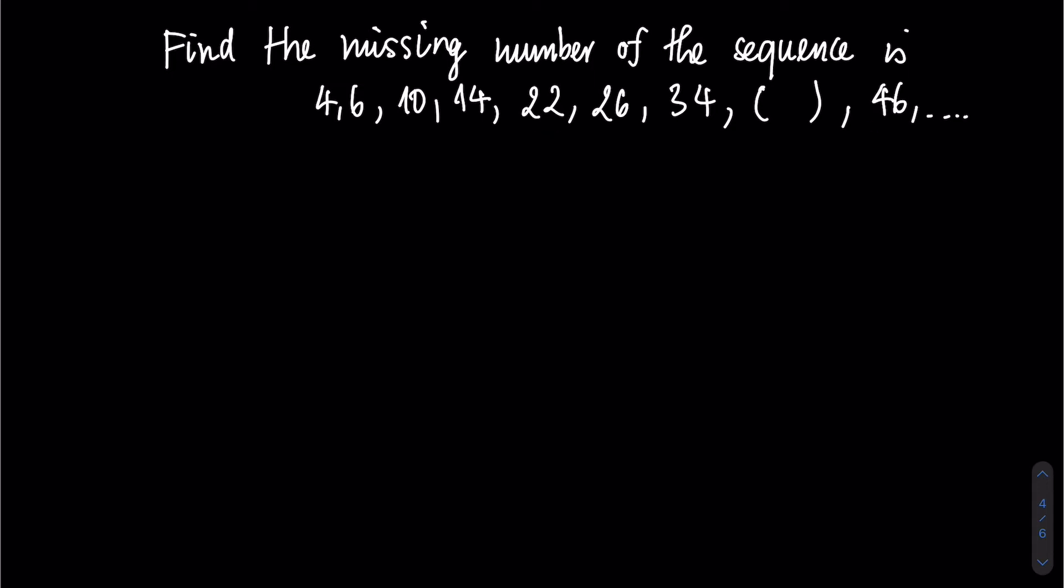Firstly, we can see that all the numbers are even. We will try to divide everything by 2. See what we will have. 4 divided by 2 is 2, 6 divided by 2 is 3, 10 divided by 2 is 5.